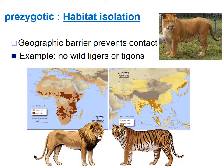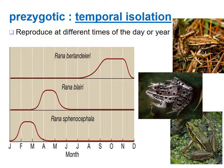Temporal isolation — temporal means time — is when organisms reproduce at different times of the day or different times of the year. If they're not reproductively active at the same time, they're not going to have offspring together.